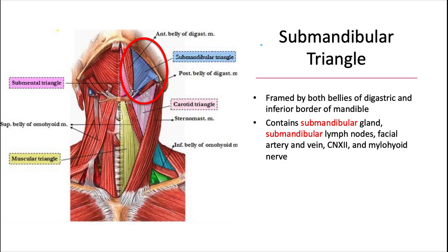The first one is the submandibular triangle. This one's framed by both the anterior and the posterior belly of the digastric, as well as the inferior border of the mandible.